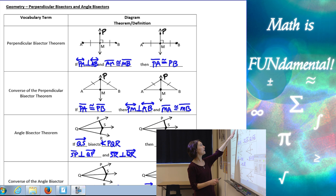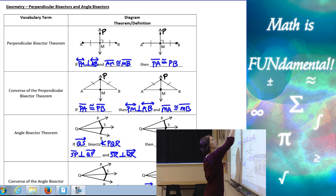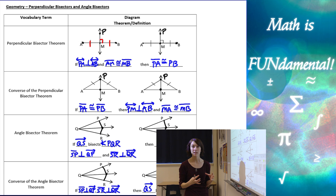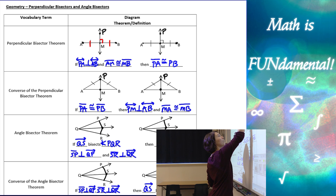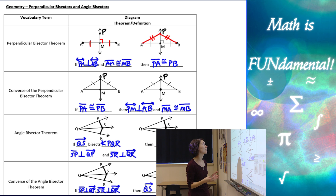The perpendicular bisector theorem says if line PM is perpendicular to line AB, which is marked in our diagram here with the right angle, and AM is congruent to MB — if I have those pieces given to me, then I can use this theorem to state that line segment PA is congruent to PB. That's what this theorem does for us.